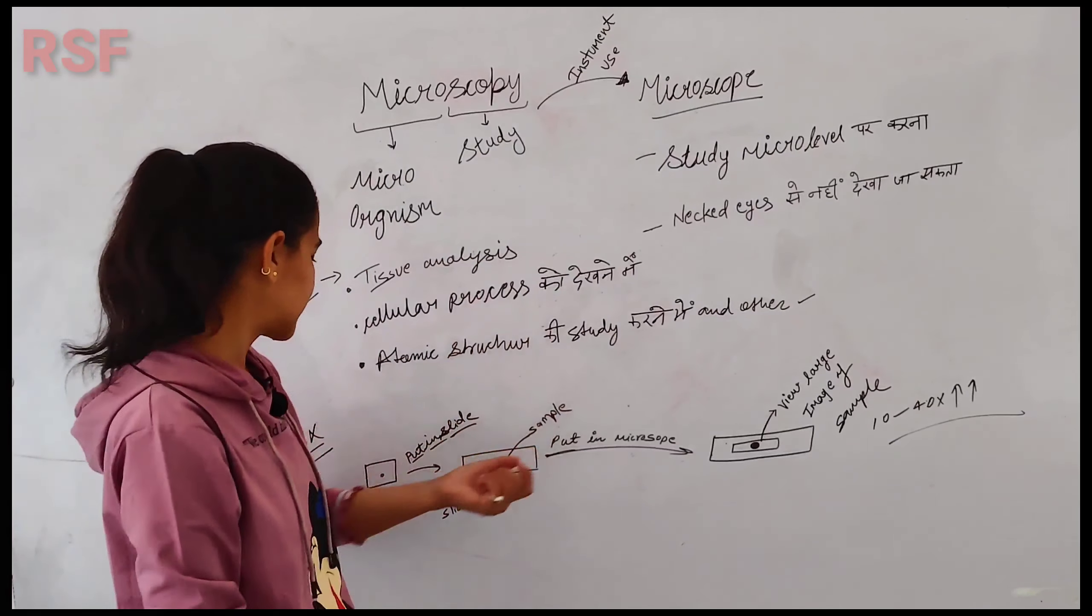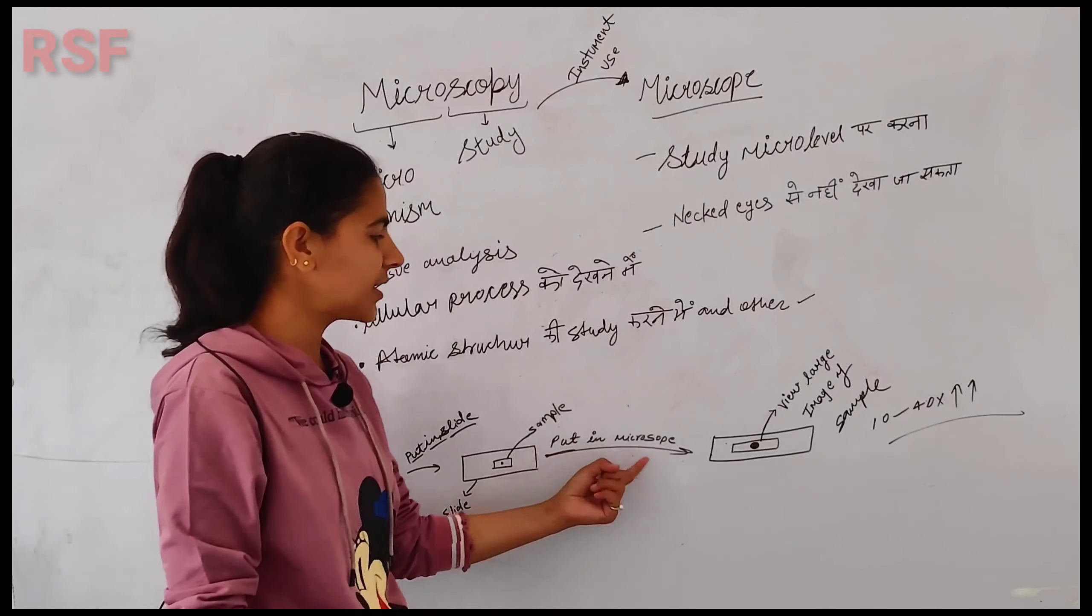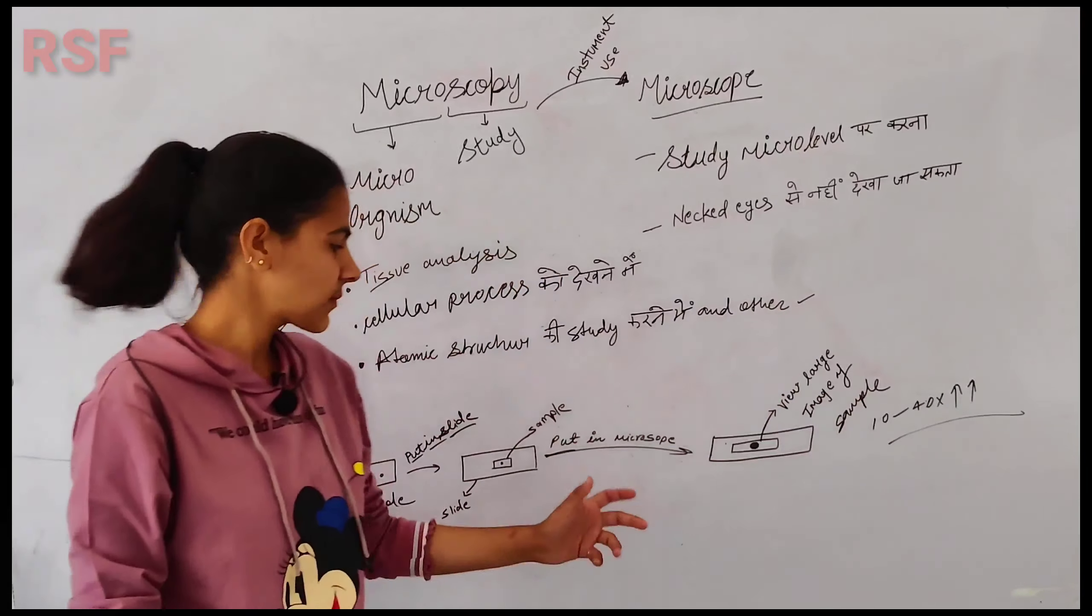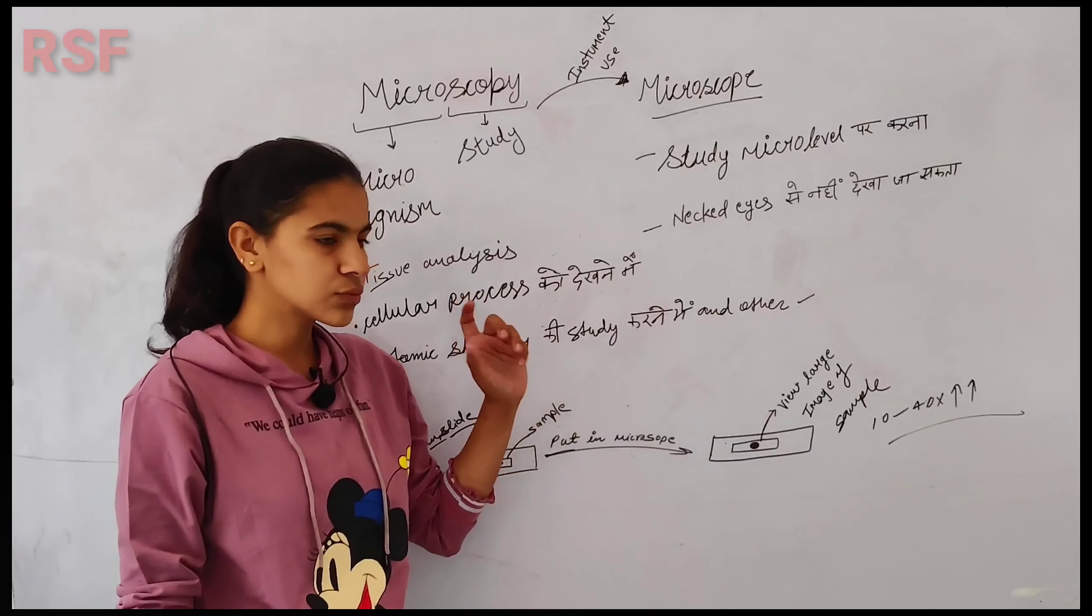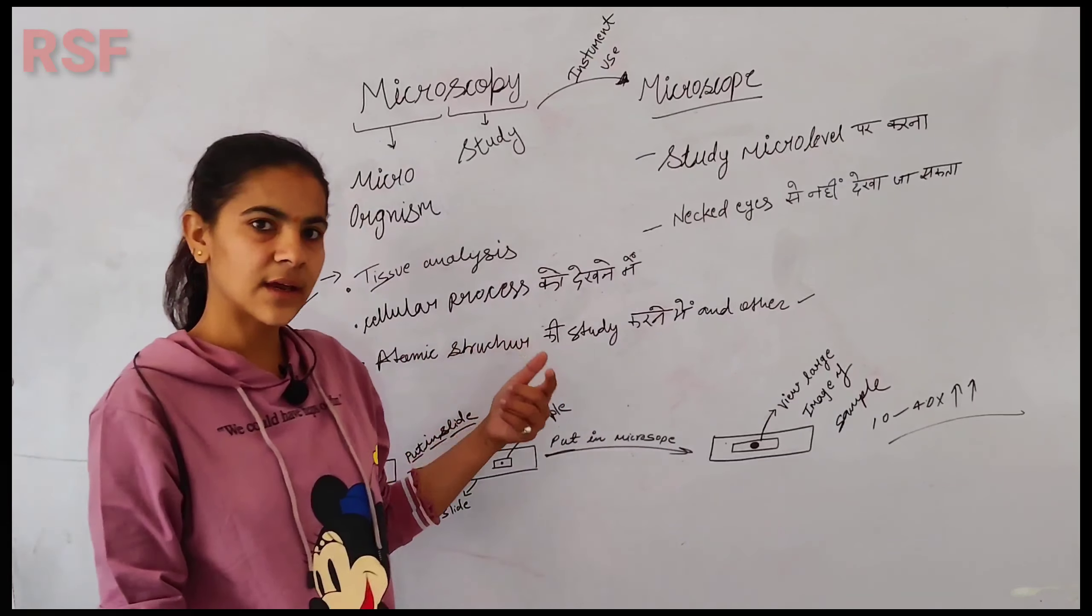For example, if you have a sample, you can put it on a slide, then put it in a microscope. Microscopy creates a large image of the sample. It can magnify the sample many times, creating a large image.